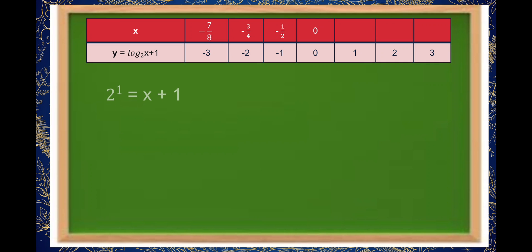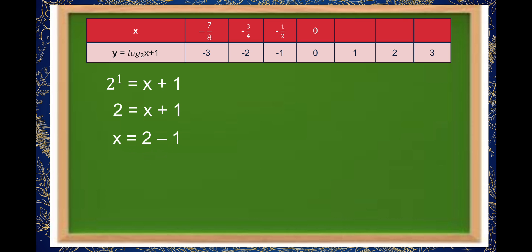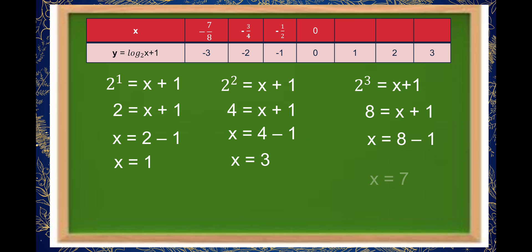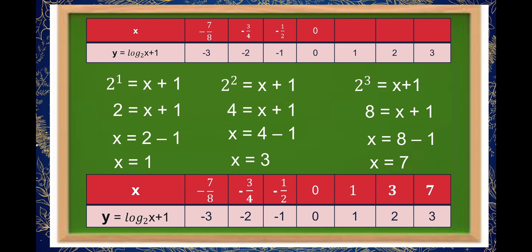For y equal to positive 1, 2 raised to 1 is equal to x plus 1, which equals 2, so x is equal to 2 minus 1, giving x equal to 1. For y equal to 2, 2 squared is equal to x plus 1, so 4 equals x plus 1, giving x equal to 3. For y equal to 3, 2 cubed is equal to x plus 1, so 8 equals x plus 1, giving x equal to 7.